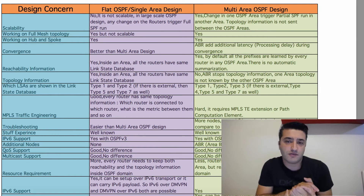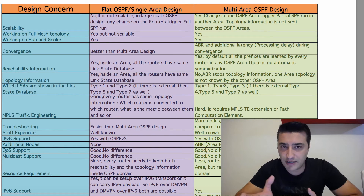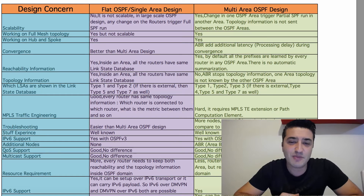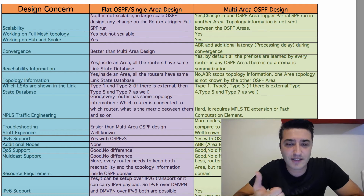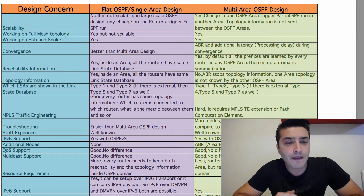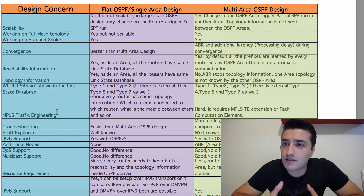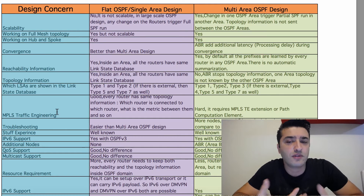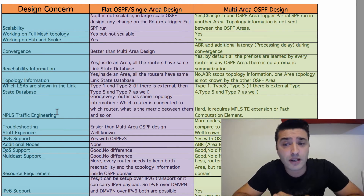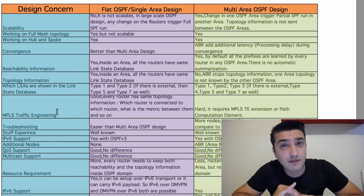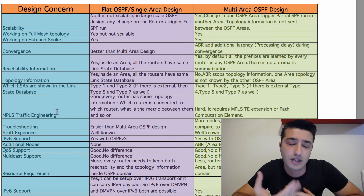In one area you can place as many routers as you want, though how many routers you should place depends on many things — that's a separate video. Here I'll talk about some similarities and differences. On the left side you can see design concerns: scalability, working on physical topologies like full mesh, hub-and-spoke, and so forth. We'll also cover convergence characteristics, reachability information, and topology information — important concepts not only for OSPF but for any routing protocol, even Layer 2 protocols.